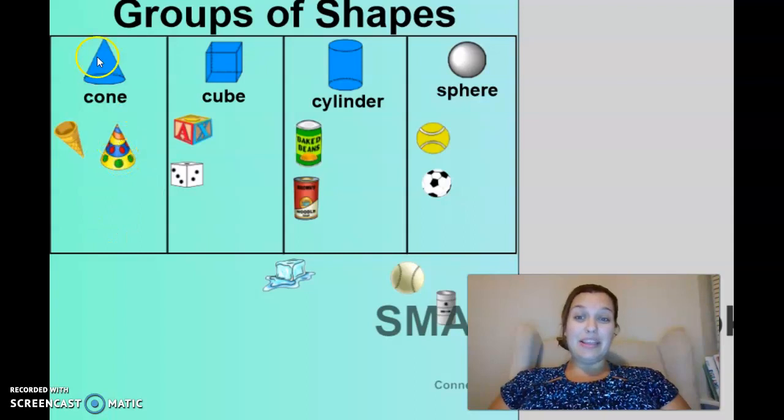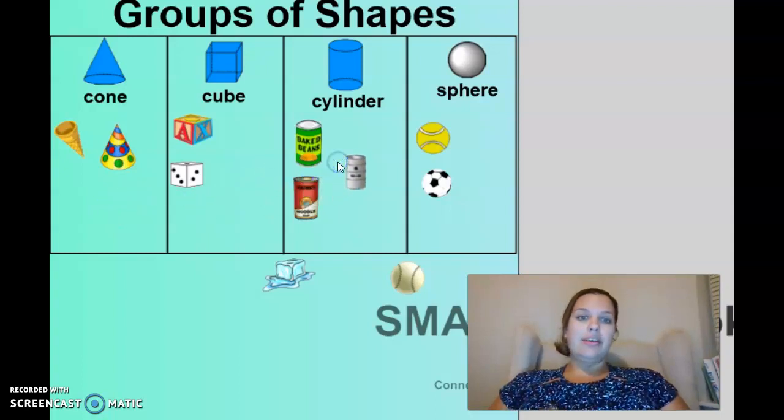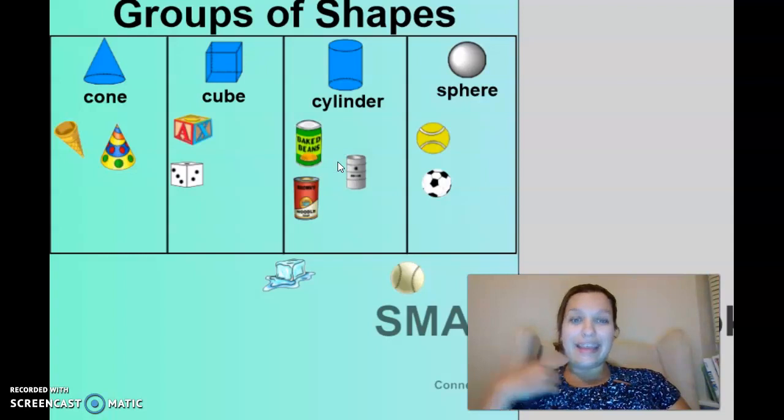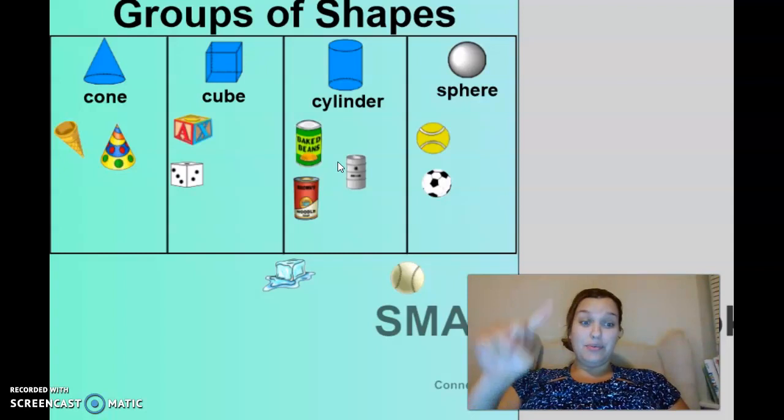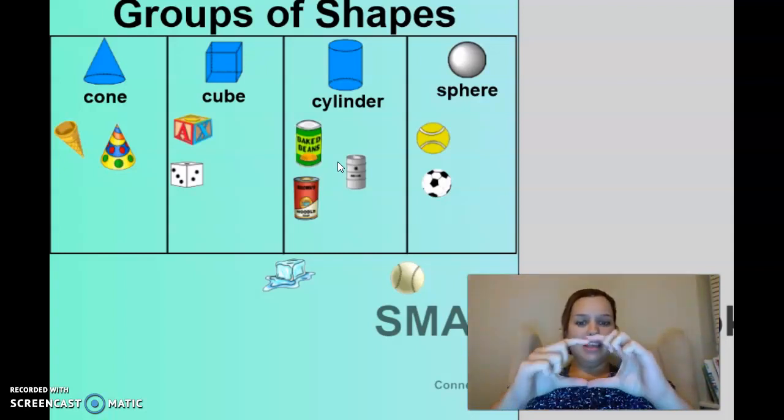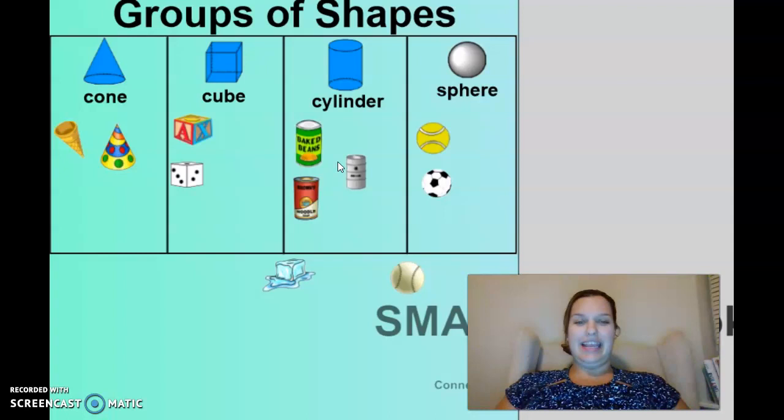Good job. This is a cone. We've got a point on top and a circular base on the bottom. Another what? Cylinder! And what two shapes are in our cylinder? Does anyone remember? Very good. We have the two faces, which are circles. And then what shape holds it together? A rectangle.